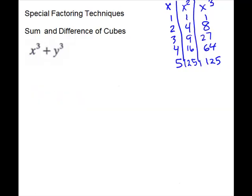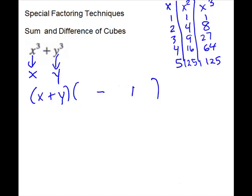Our next problem is also going to be cubes — it is two terms and exponents of three. This one has plus inside. If you memorized it as a pattern, you really don't need a different pattern for the ones with plus. So you still take the cube roots. Your first parentheses will always use the sign of the problem with those cube roots, so this one will be x plus y. Second set of parentheses: your first sign to get canceling is the opposite of that sign — so if the first one is plus, this one has to be minus. Last one is always plus. Then you want the combinations of the roots: first root times itself, first root times the second root, and the last root squared.